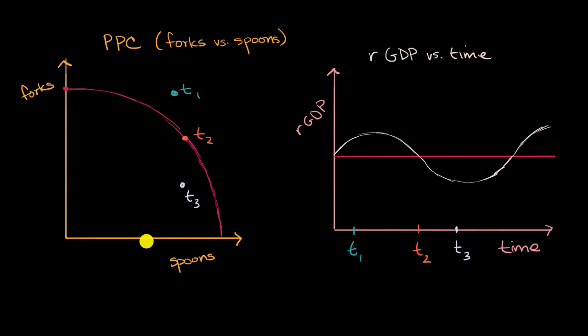But what we have here is thinking about three different scenarios at three different times for this country. And we're going to connect the dots between the visualization on the left, the production possibilities curve, and the visualization on the right. And we're also going to think about other economic indicators other than real GDP, and how those might play out.